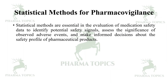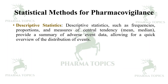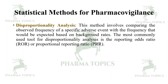Statistical methods are essential in the evaluation of medication safety data to identify potential safety signals, assess the significance of observed adverse events, and make informed decisions about the safety profile of pharmaceutical products. Various statistical techniques are employed to analyze adverse event data and detect patterns that might indicate a safety concern. Descriptive statistics — such as frequencies, proportions, and measures of central tendency (mean, median, mode) — provide a summary of adverse event data. Calculating incidence rates helps determine the rate at which adverse events occur in relation to exposure to a medication, which is useful for comparing occurrences across different populations and time points.